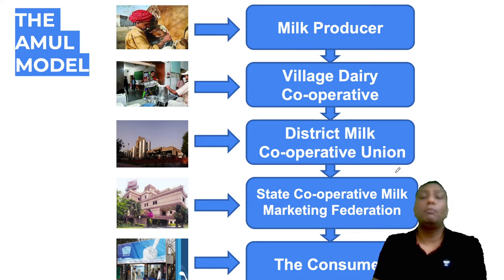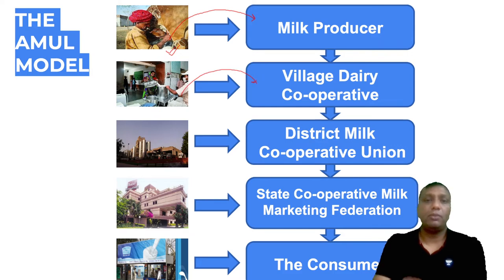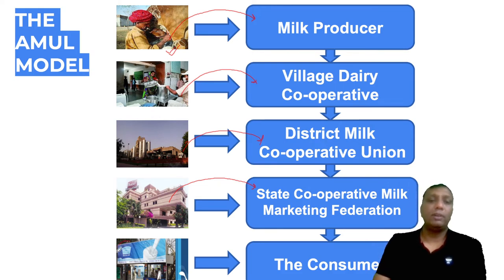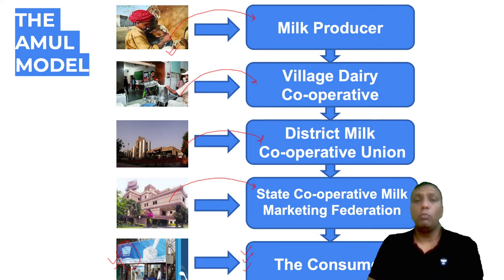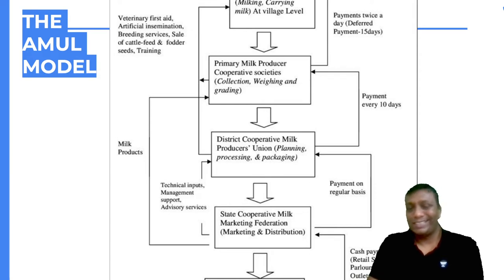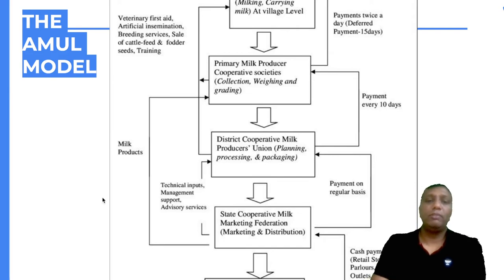In the Amul model flow, milk producers — the farmers — produce the milk, which then reaches the village dairy cooperatives. From the village dairy cooperative, all farmers deposit their milk, which then transfers to the district milk cooperative unions. From there it goes to the state cooperative milk marketing federation, then to the Mother Dairy brand, and finally to all the outlets where consumers directly purchase. Many state brands like Saras, Sudha, Prag, and Mother Dairy in Delhi all follow this Amul model principle.